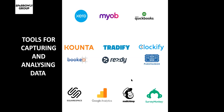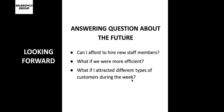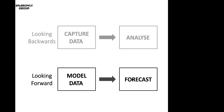The second type of questions are those that reference the future — answering questions that require us to look forwards. Questions like: can I afford to hire new staff members? What if we were more efficient? And what if I attracted different types of customers during the week? These are all questions about the future. Answering these types of questions also requires two steps: modelling data, followed by forecasting. When we need to answer questions about the future, we obviously won't have any data to analyse — the things that we care about haven't occurred yet. Because you don't have any captured data, we instead make the data up. We do our best to guess what the data will look like when it is captured in the future. We call this modelling the data.